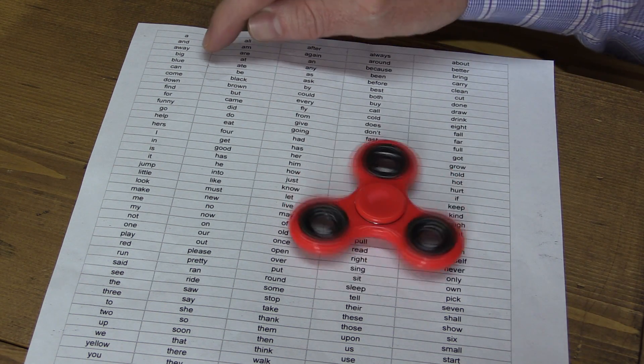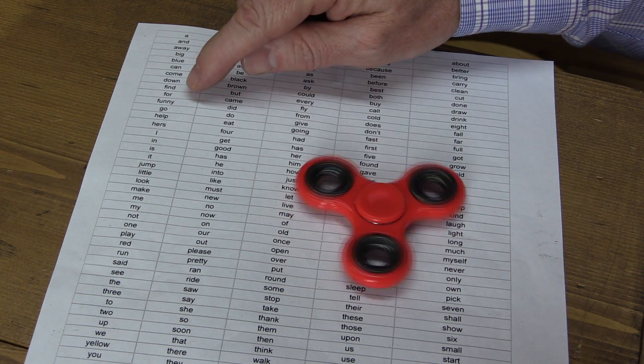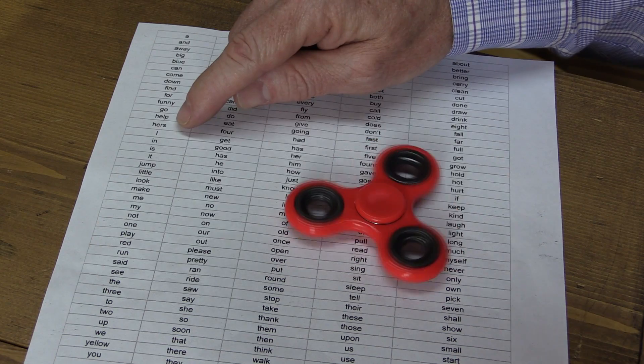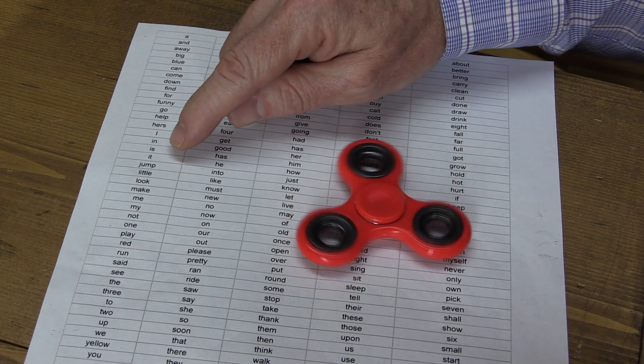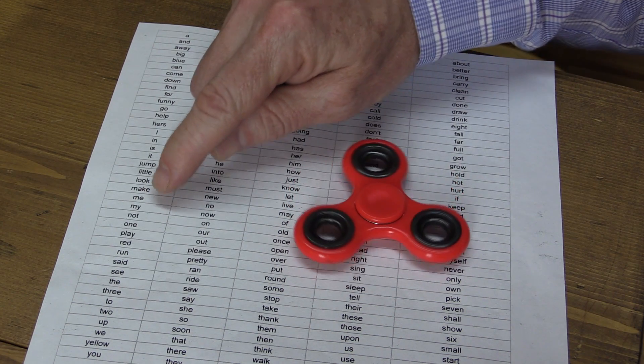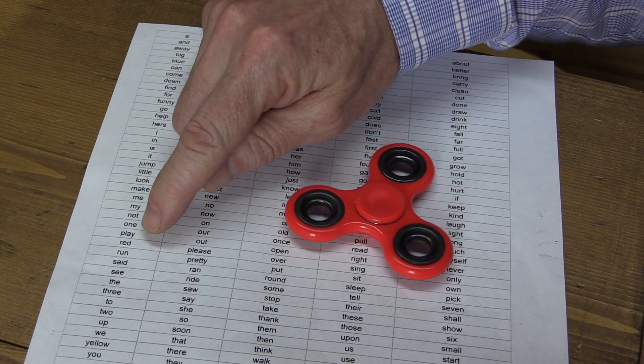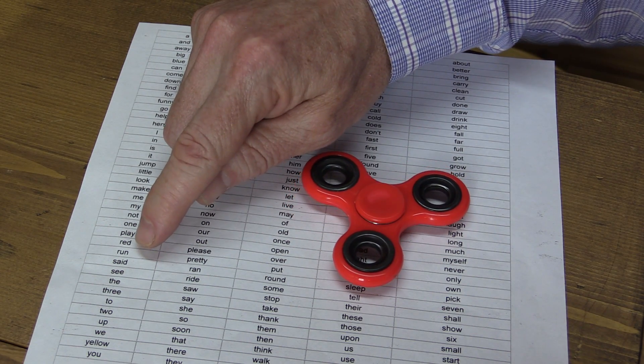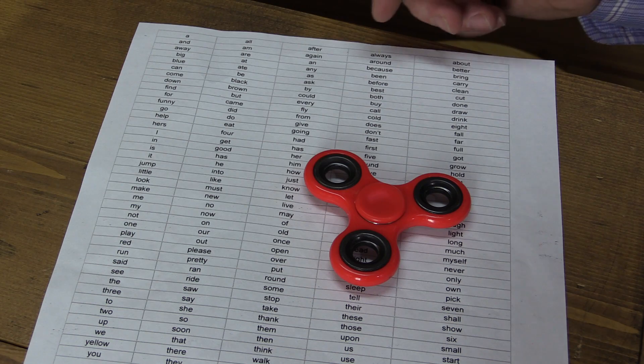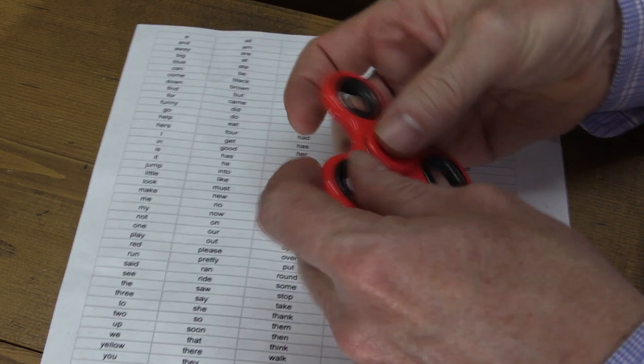A, and, big, blue, can, come, down, find, for, funny, go, help, hers, I, in, is, it, jump, little, look, make, me, my, not, one, play, red, and run. Once again, you're getting the students to read, you're getting them excited because they're playing with their spinner, and this is a fun activity.